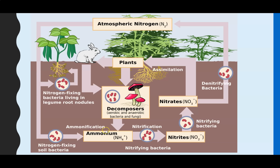We'd call that ammonification because we created ammonia. That ammonium needs to be nitrified and go through the process of nitrification before it can be absorbed into the plants, and this happens in two stages. Nitrifying bacteria convert ammonium into nitrites, and then further nitrifying bacteria within the soil convert the nitrites into nitrates. So the nitrification step takes us from ammonium to nitrite to nitrate.